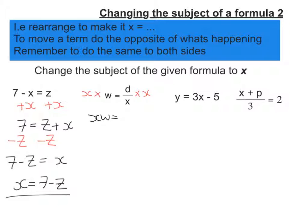And d times x over x, well the x is cancelled, so I'm just left with d. So we've got xw equals d, or x times w equals d. So to remove that w I have to do the opposite of multiplying, which is dividing. So I am left with x on the left hand side, as the w is cancelled, is equal to d over w.